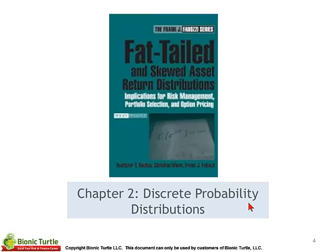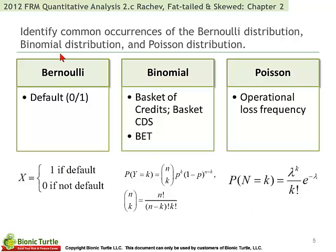You may find the Monte Carlo simulation and correlated random variables interesting to the extent they help illustrate those concepts in Jorion. So, chapter 2, discrete probabilities in Raychev — we're asked to identify common occurrences of the Bernoulli, binomial, and Poisson distributions. These would be three of the more common discrete distributions to characterize random variables.